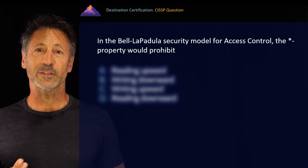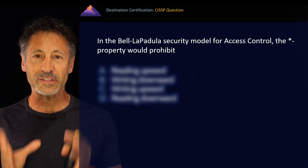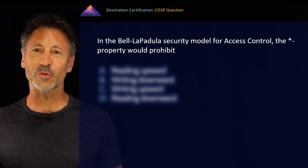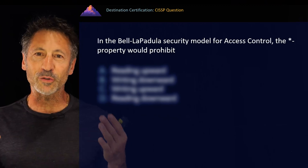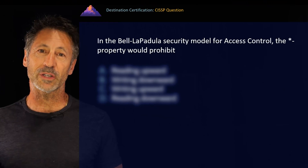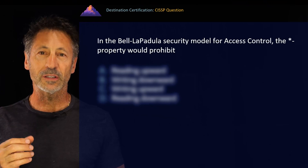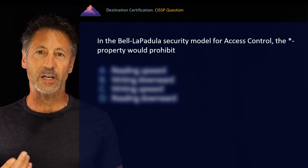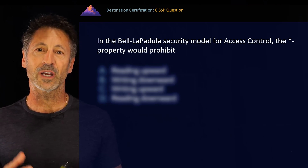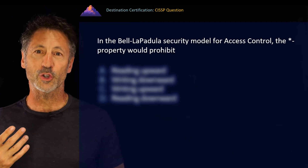The reason you want to read the question numerous times is to ensure that you fully understand what the question is asking you. As busy professionals, we have programmed ourselves to do things very quickly so that we can move on to the next item on our list. If this is the way we approach the CISSP exam, it's a recipe for disaster. Slowing down and reading the question multiple times will prevent our minds from assuming what the question is asking, even before we get to the end of it.